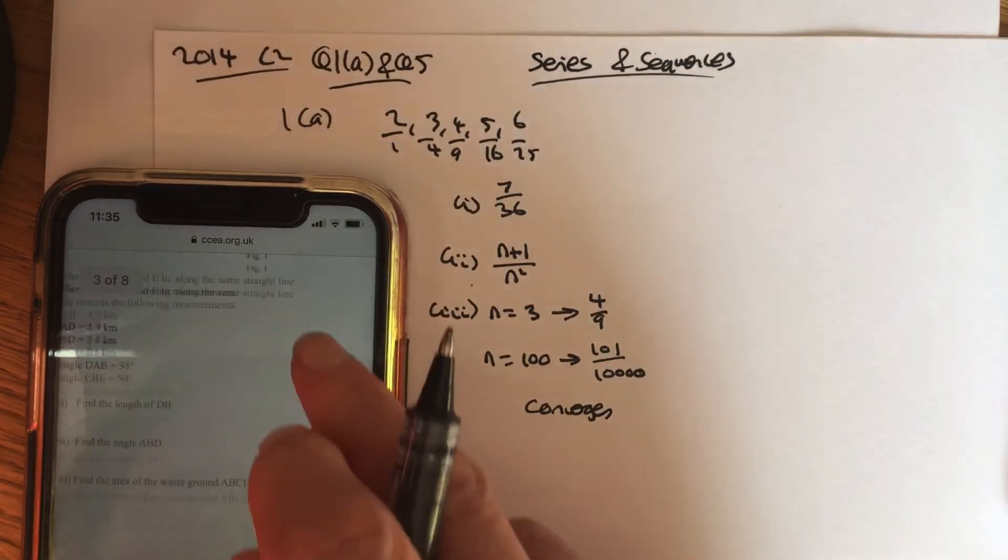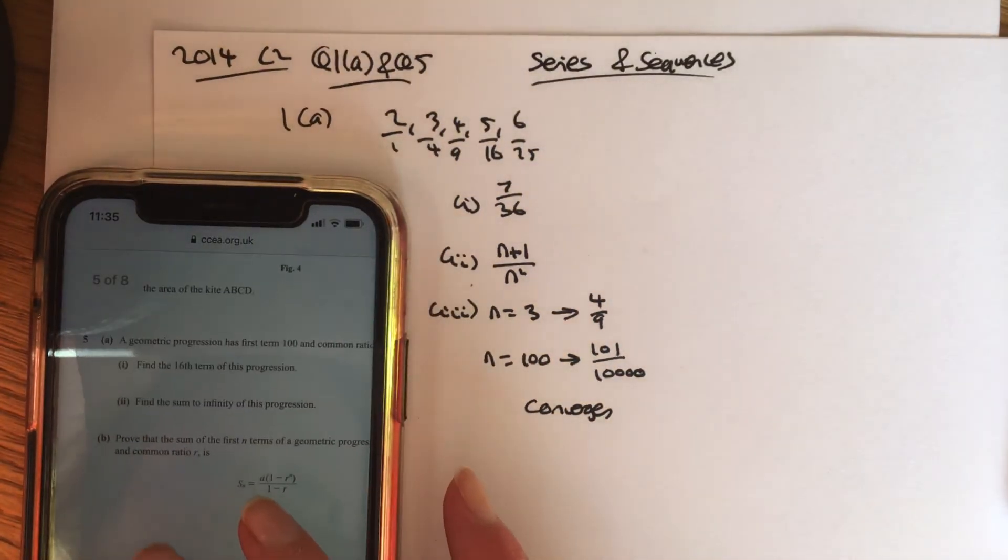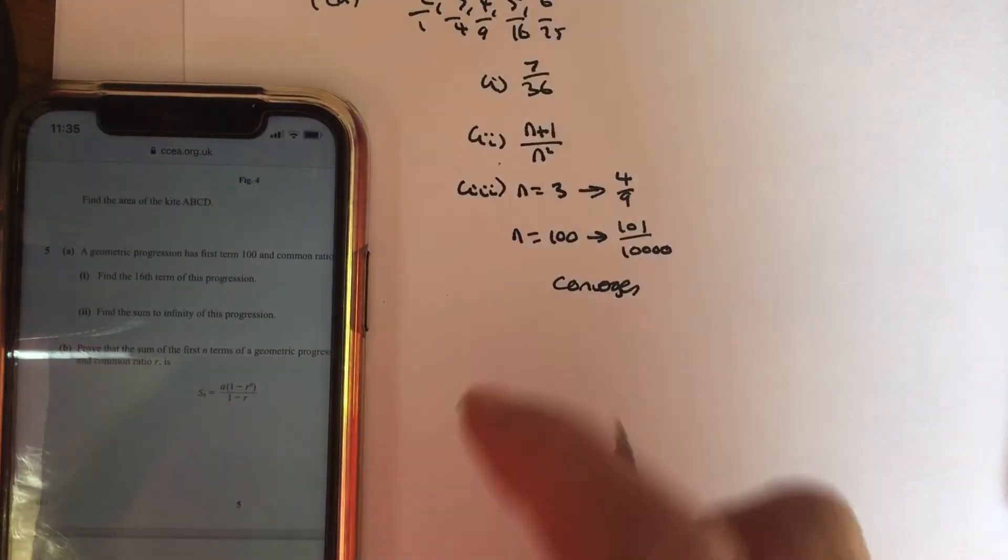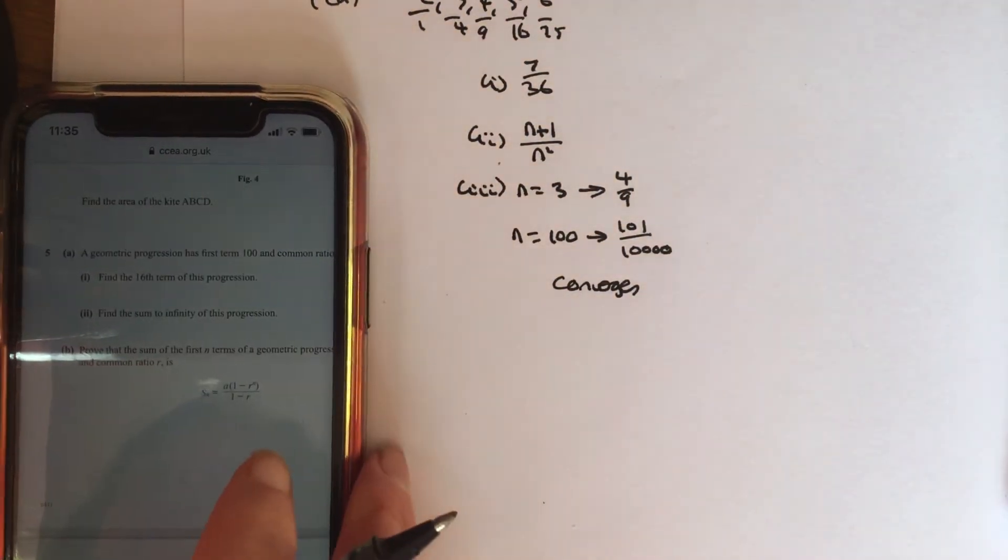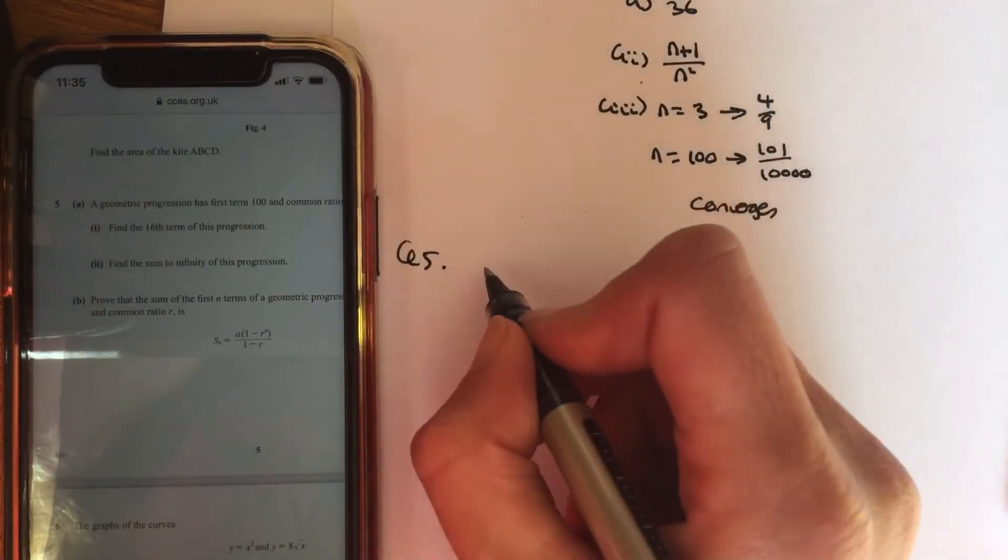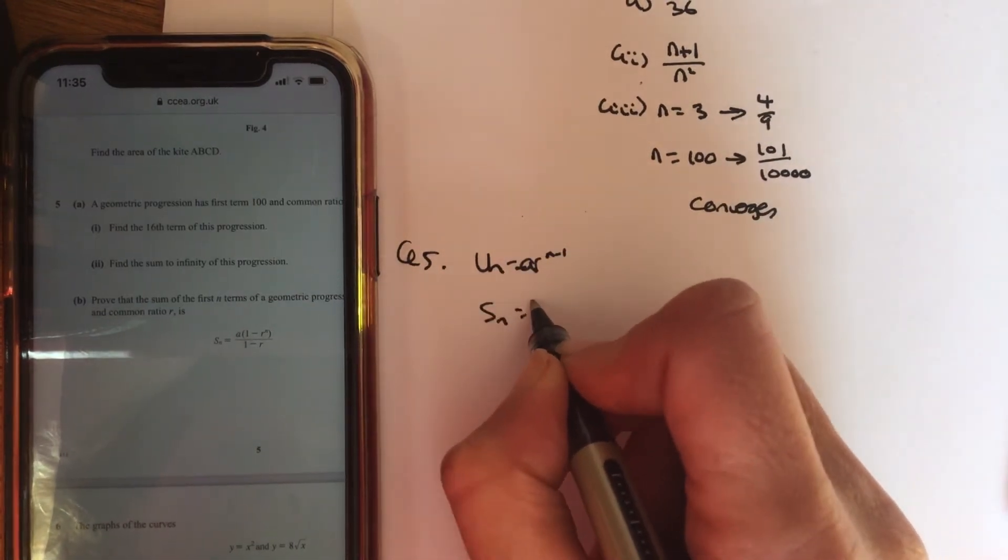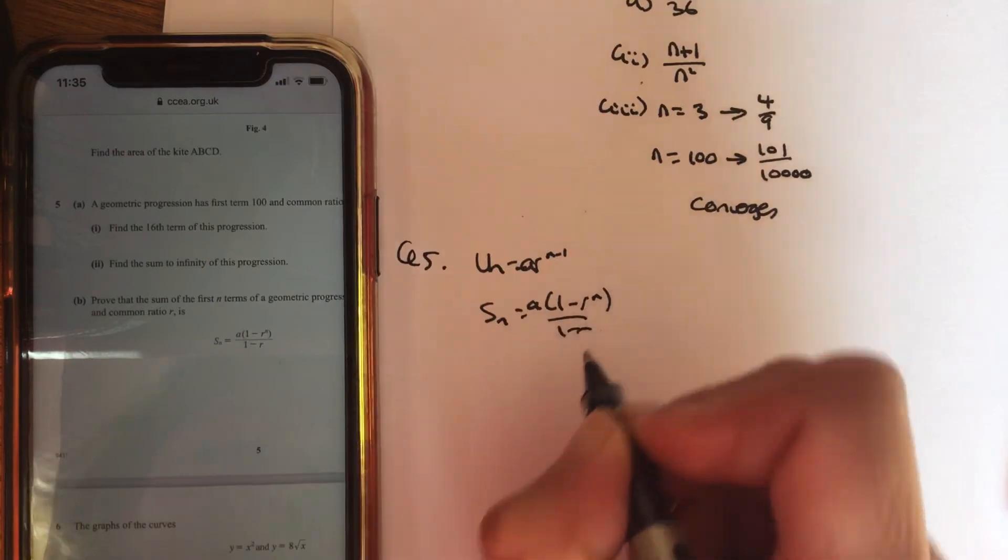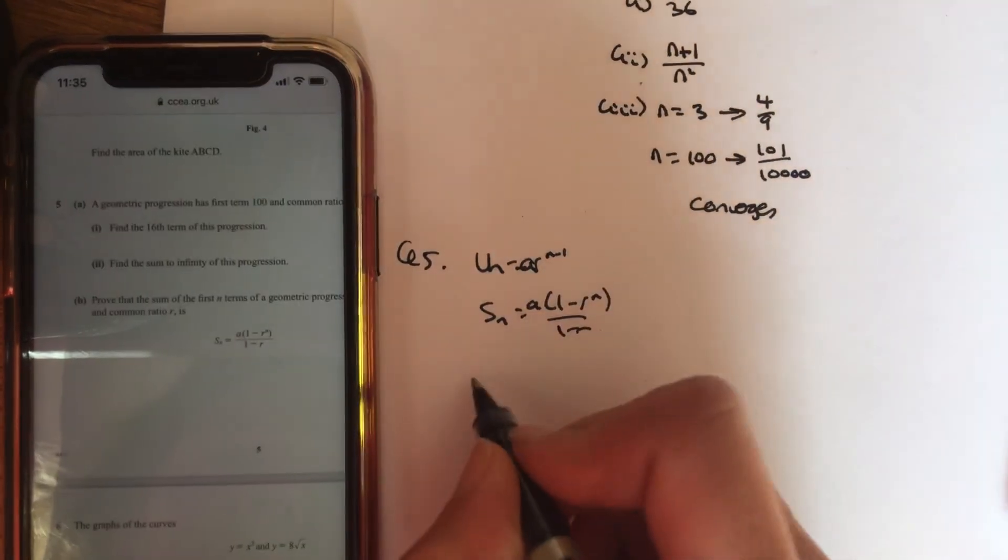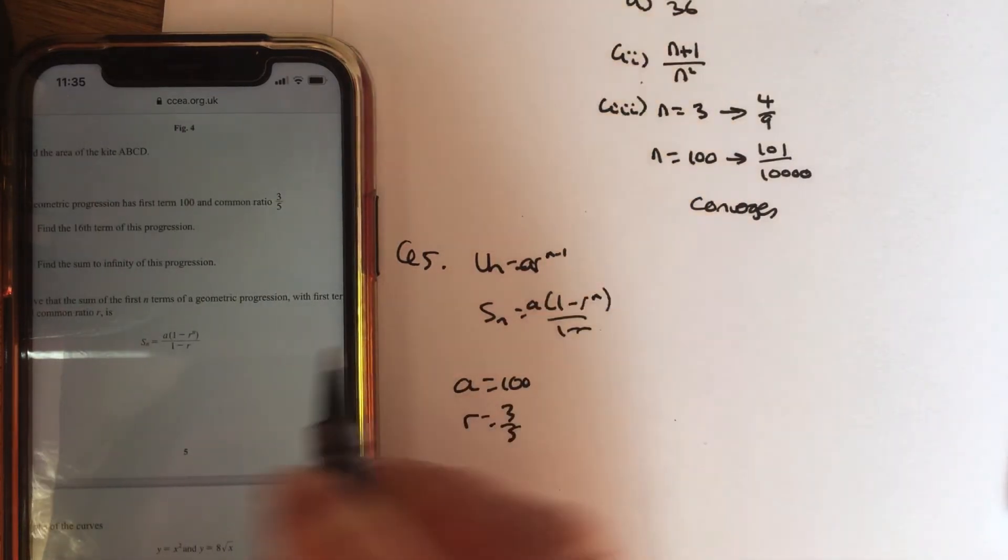The next one we have to look at in this paper is question 5. I scroll down to find it. There's question 5. And it's talking about a GP. So the first thing I'm going to do is write down the formula for GP. So un equals ar^(n-1), and sn equals a(1-r^n) over (1-r). And it is saying the first term is 100, so a is 100. The common ratio is 3 fifths.